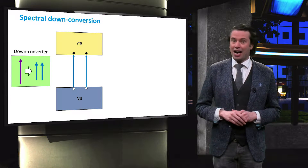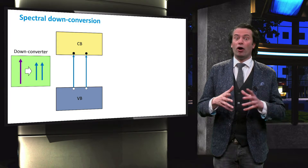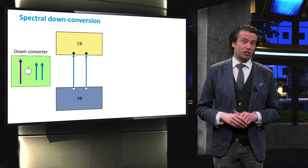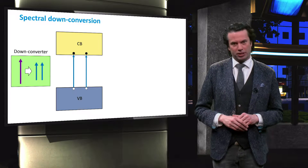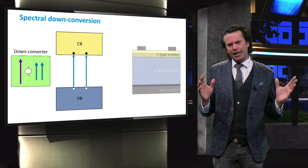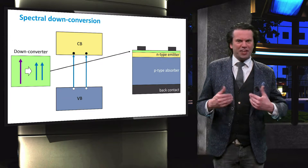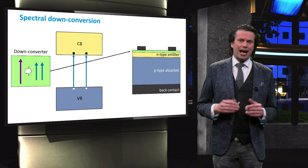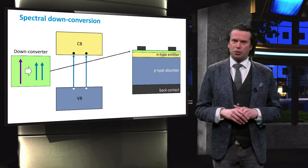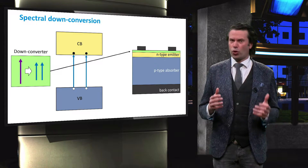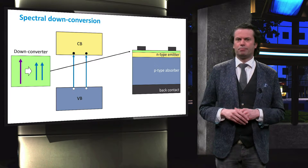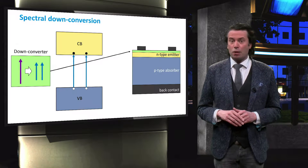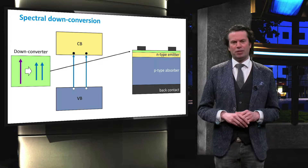If the photon had high enough energy to be split into three photons with sufficient energy, a theoretical external quantum efficiency of 300% could be obtained. In contrast to upconversion, a downconverting layer has to be at the front of the solar cell, as highly energetic photons have a high absorption probability and are therefore quickly absorbed in the absorber layer. Because of the required placement at the front of the cell, parasitic absorption might be a problem in this technology.